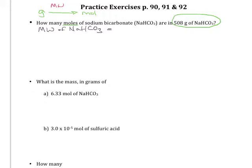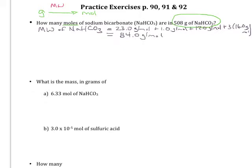We've already practiced calculating the molecular weight and you need your periodic table to do that. Remember that we're going to round everything to one decimal place. For sodium bicarbonate, we're going to need the mass of sodium (23.0), hydrogen (1.0), carbon (12.0), and 3 oxygens. Adding that all together to one decimal place.